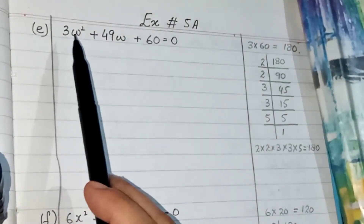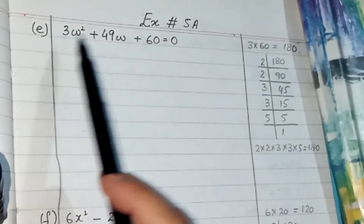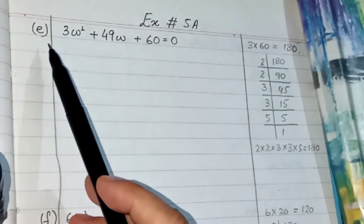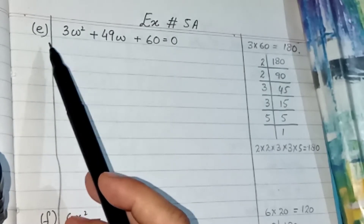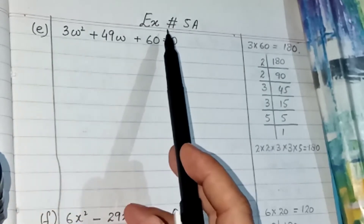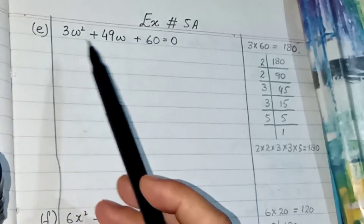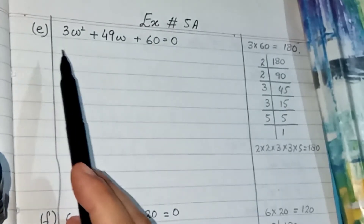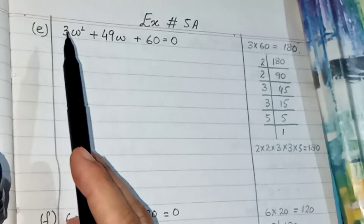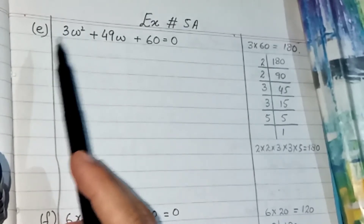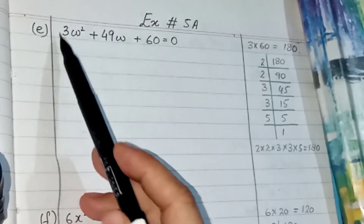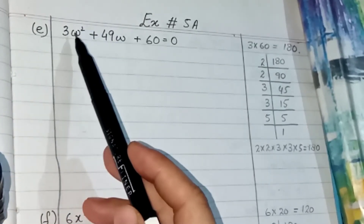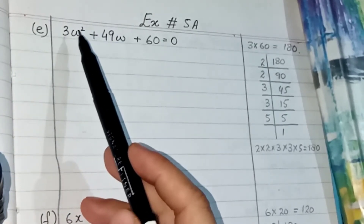Bismillahirrahmanirrahim, Assalamualaikum. In this video I am going to discuss the remaining part of question number 5, exercise 5A. In the last three parts A, B, C, the coefficient of the first term was 1.